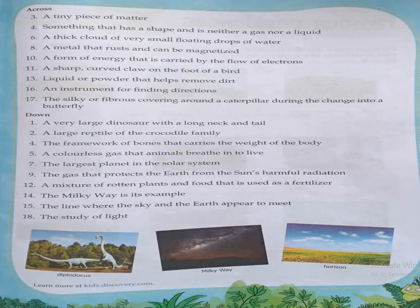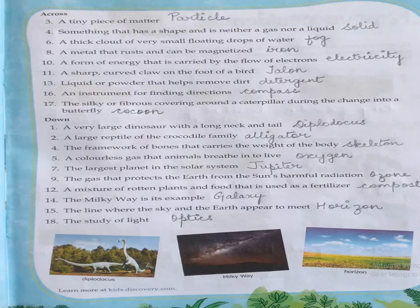The last across clue, number 17, is: the silky or fibrous covering around a caterpillar during the change into a butterfly. When a caterpillar changes into a butterfly, it produces a silky fiber — that is known as a cocoon. Silk comes from the cocoon. You can see the spellings here — write them correctly in your book.